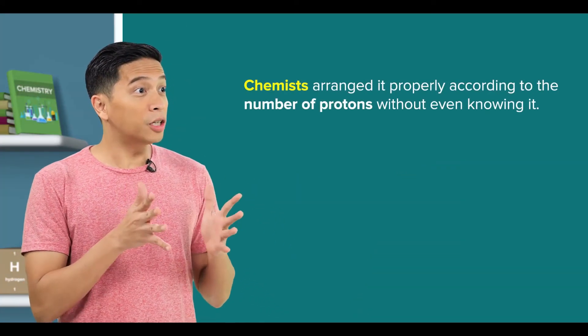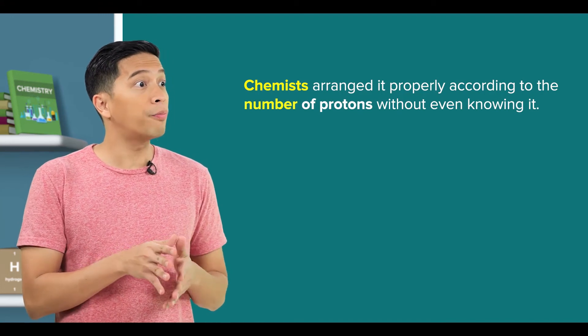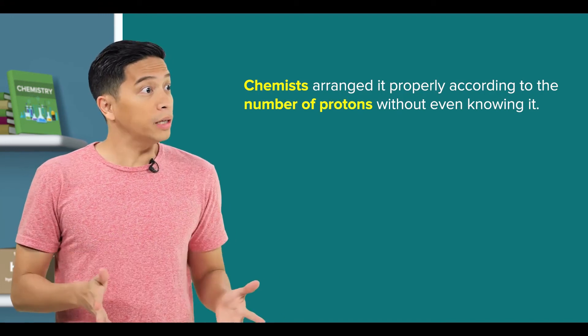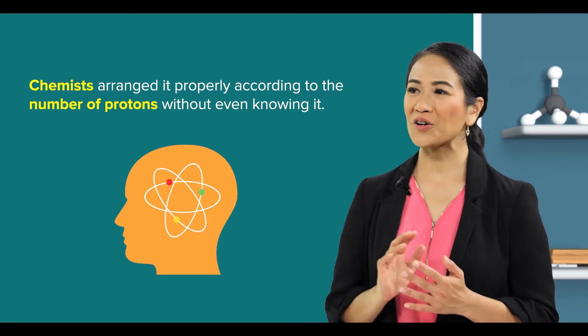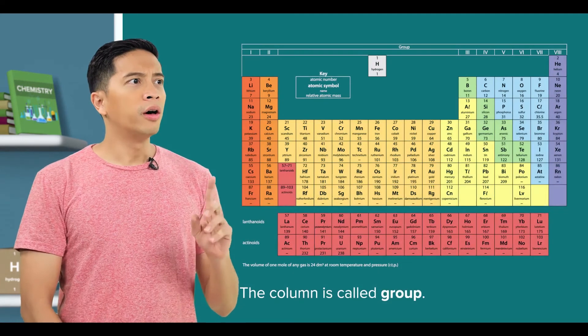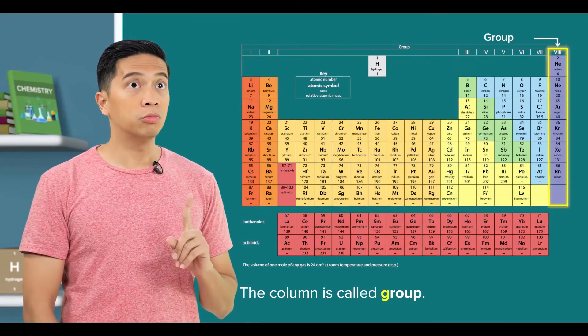Oh, amazing! They arranged it properly according to the number of protons without even knowing it! That is the genius of early chemists. Amazing. So, the column is called group?